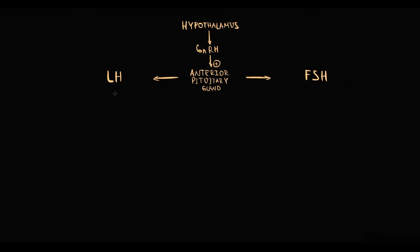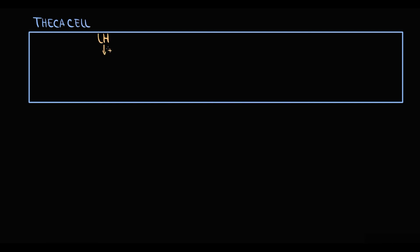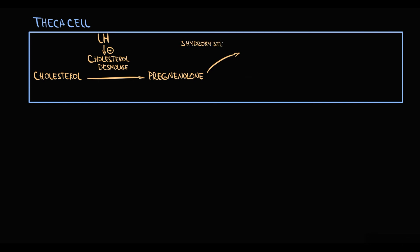In females, luteinizing hormone acts on theca cells. In response, theca cells begin to produce progesterone and androstenedione. LH stimulates the cholesterol desmolase enzyme in theca cells, and cholesterol desmolase converts cholesterol into pregnenolone. Theca cells also have the enzyme 3-beta-hydroxysteroid dehydrogenase, which converts pregnenolone into progesterone.